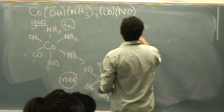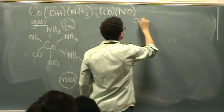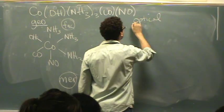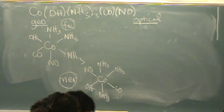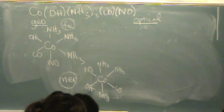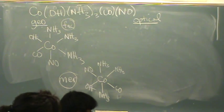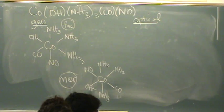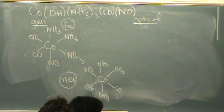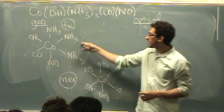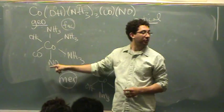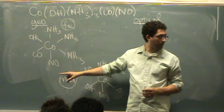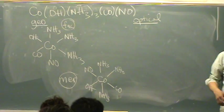Now what I want to do is draw my optical isomers. It might take some scratch work in the very beginning because you don't know precisely which one it's going to be. The fac one — because you have three ligands the same and the other three are all different — will have an optical isomer. It's not going to be its own mirror image.